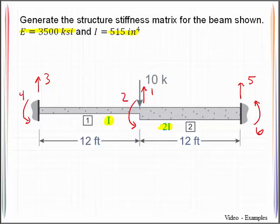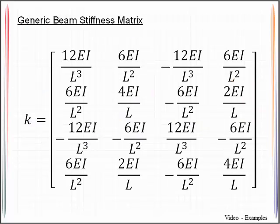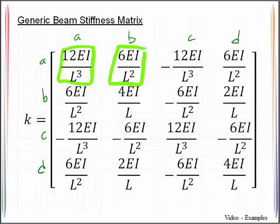We need to recall that for a beam element, the stiffness matrix is labeled as such. We would label these A, B, C, D. If you pay attention to this matrix, you'll notice there are some repeating terms: 12EI over L cubed, 6EI over L squared, 4EI over L, and 2EI over L.